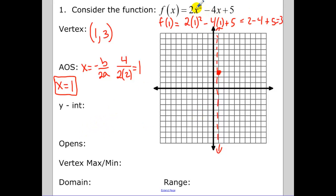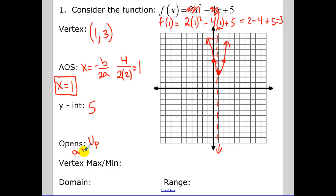Plugging in x equals 1, we get 2 minus 4 plus 5, which equals 3. So the vertex is the point (1, 3). Now for the y-intercept: make x zero, so the quadratic and linear terms go away, giving us a y-intercept of 5. Plot that point. Using axis of symmetry, the y-intercept is 1 unit away, so we go 1 unit in the opposite direction to find a symmetric point, giving us an idea of the width of the graph.